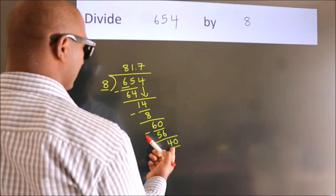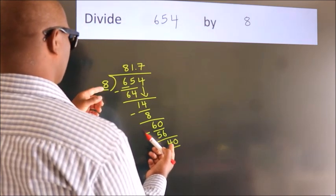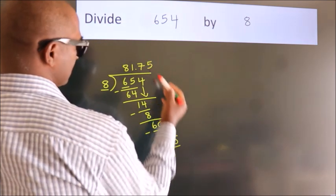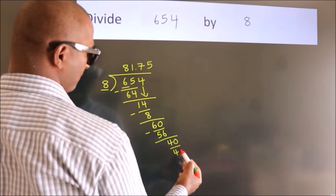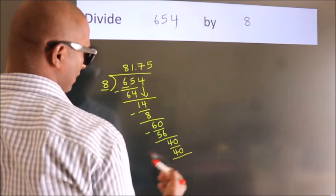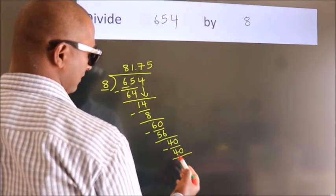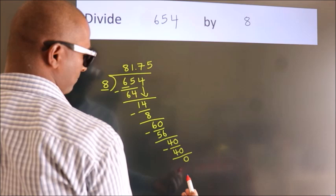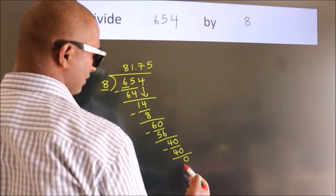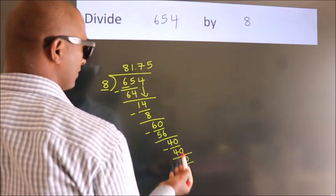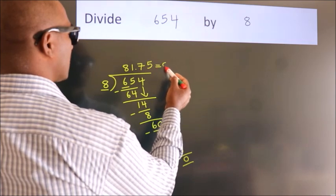When do we get 40 in the 8 table? 8 times 5 equals 40. Now, we subtract. We get 0. Here, we got remainder 0. So, this is our quotient.